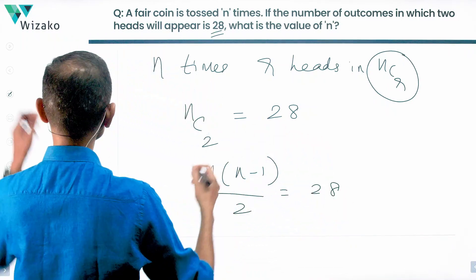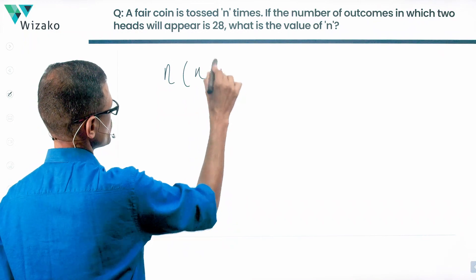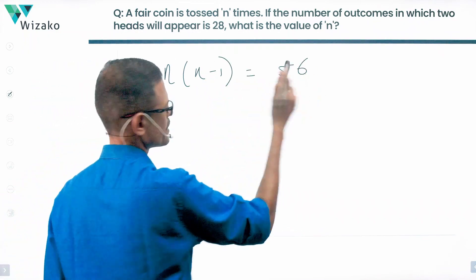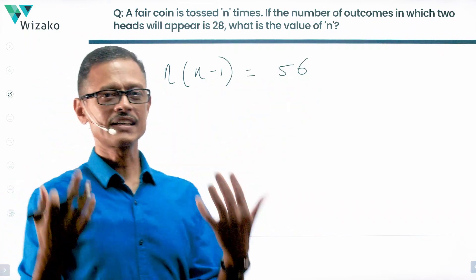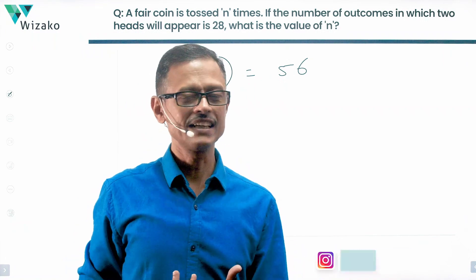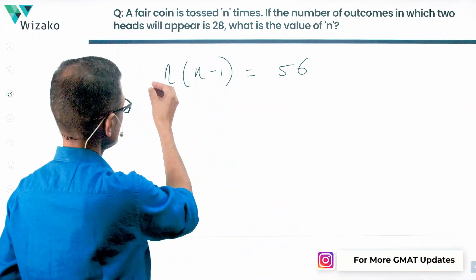Cross multiply - what we have is n times (n-1) equals 56. Do not expand it and try solving it as a quadratic equation.